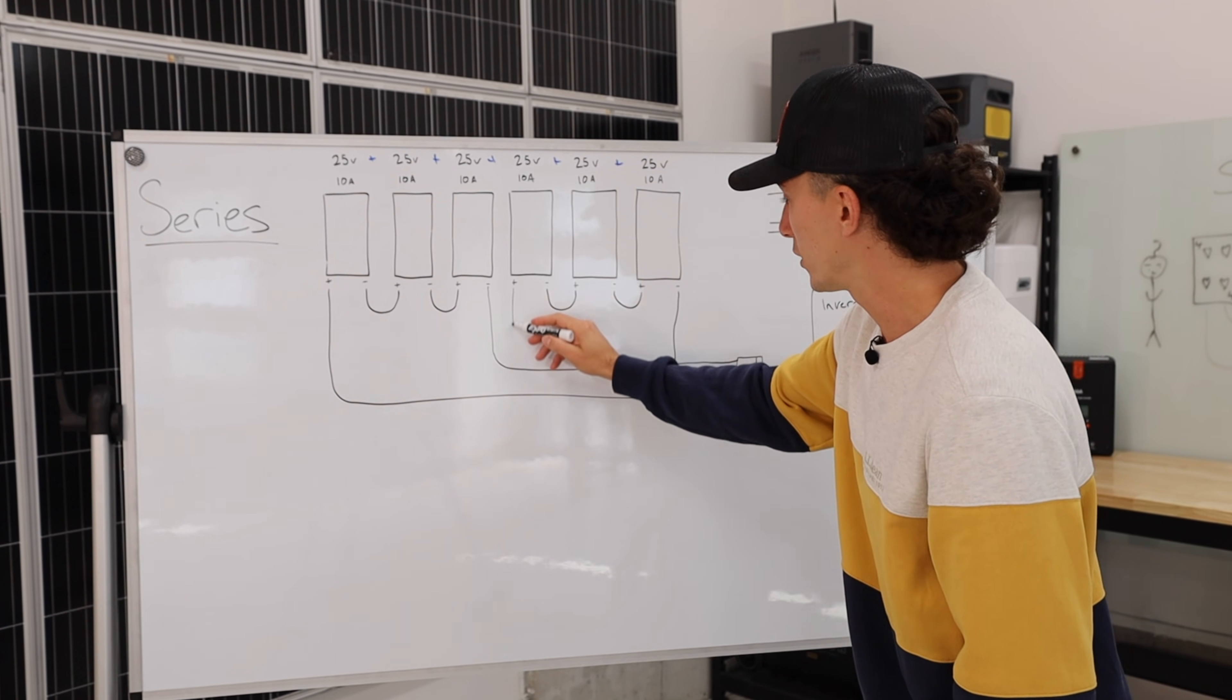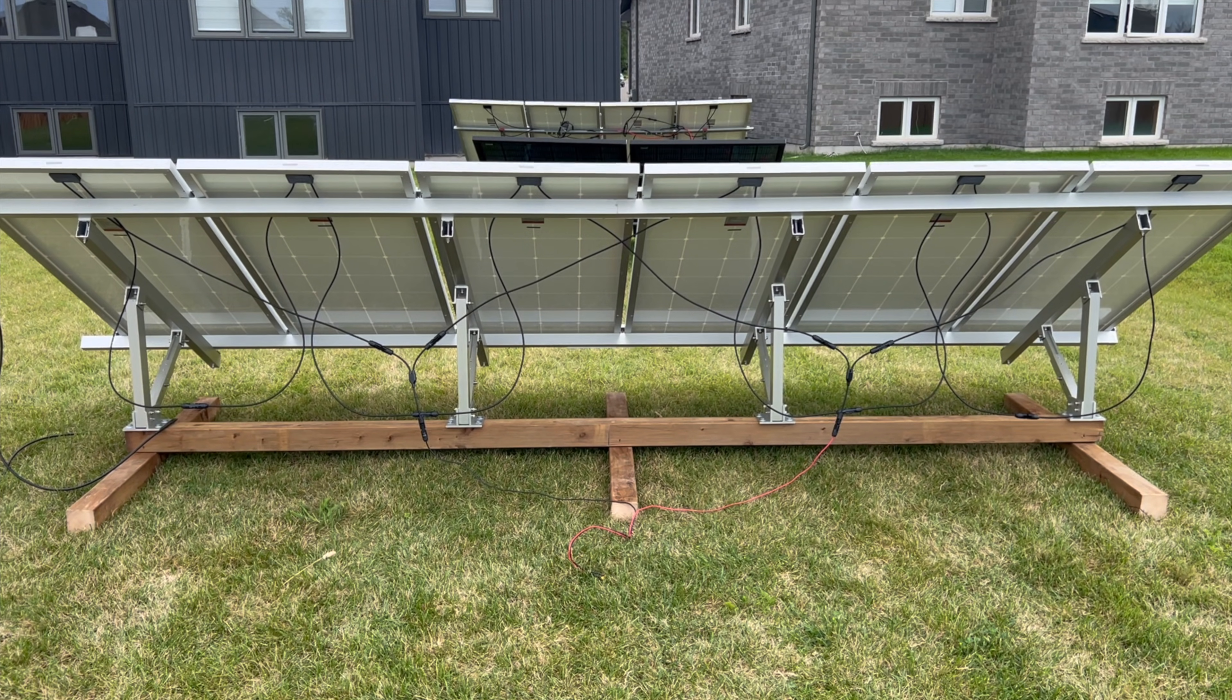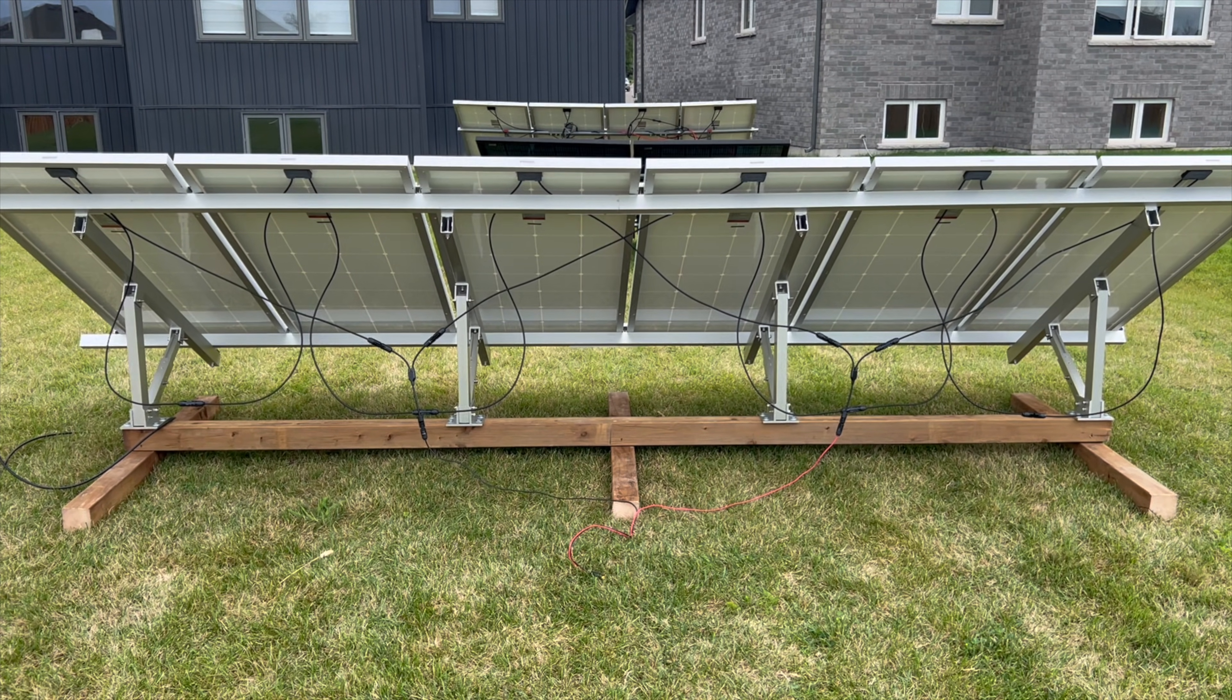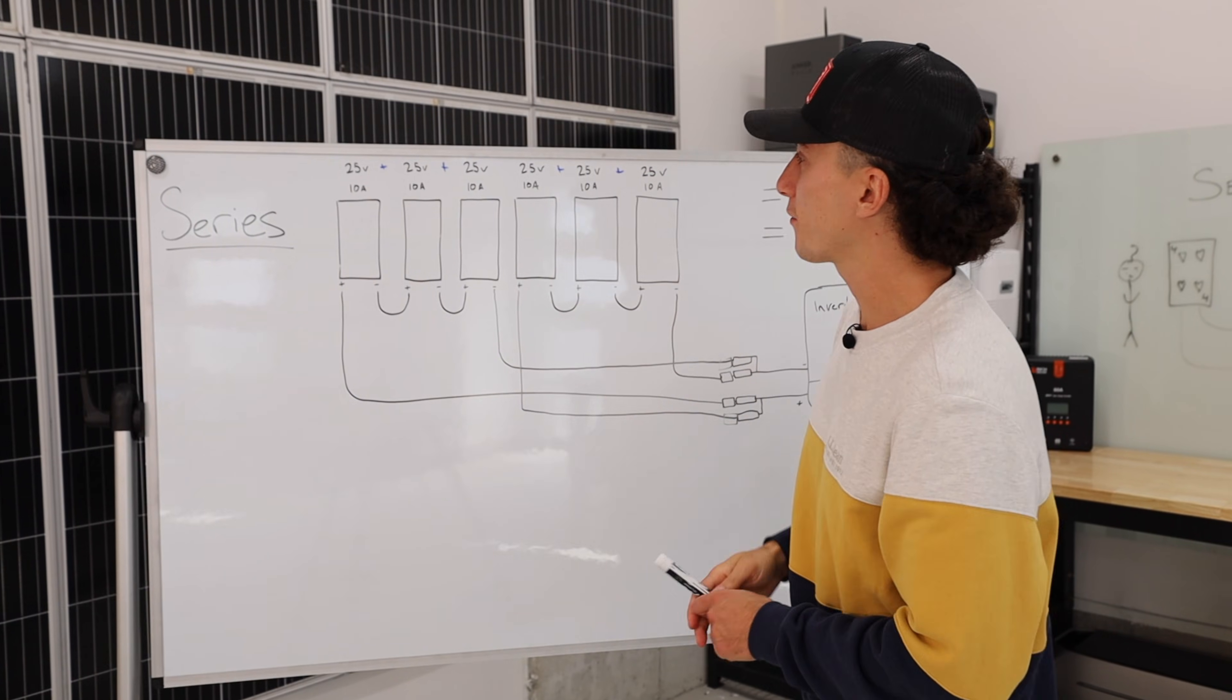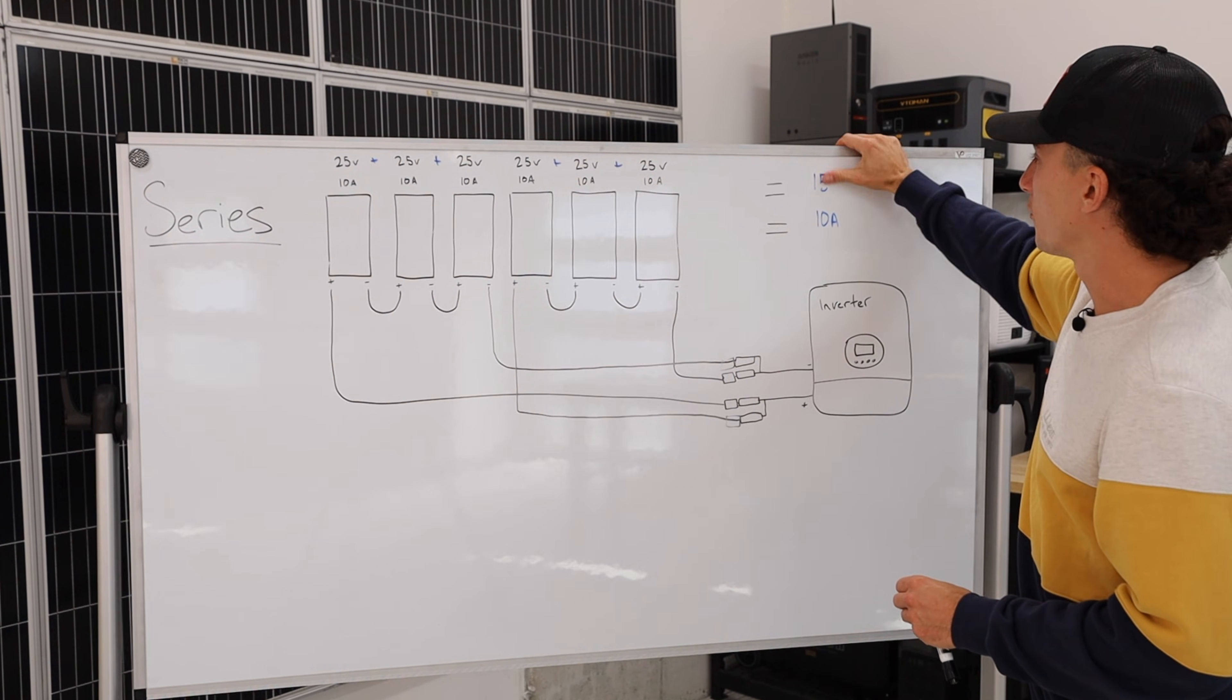Now you have two strings, two different input strings of three panels. So now you would break that in half, you add 25 plus 25 plus 25—the maximum voltage that you're going to have with this setup is going to be 75.